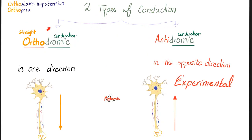There are two types of conduction: orthodromic and antidromic. 'Dromic' means conduction; 'ortho' means straight — so orthodromic goes in one direction. 'Anti' means opposite — antidromic is in the reverse direction. This relates to the term dromotropic: positively dromotropic means increasing conduction in the heart, negatively dromotropic means decreasing it.